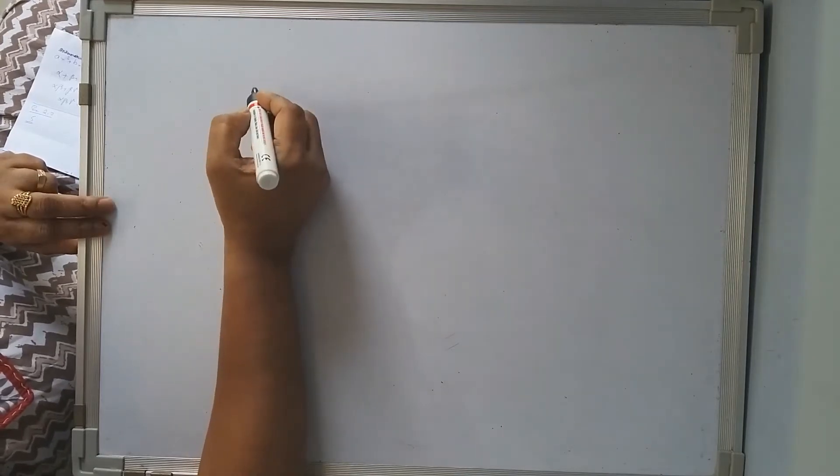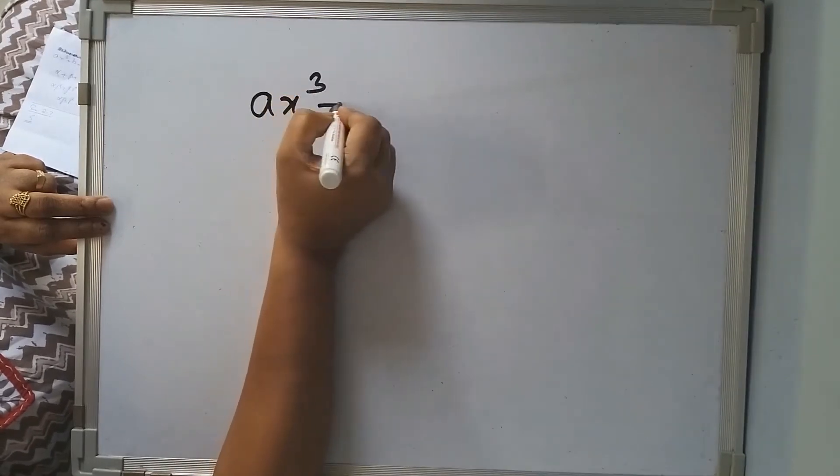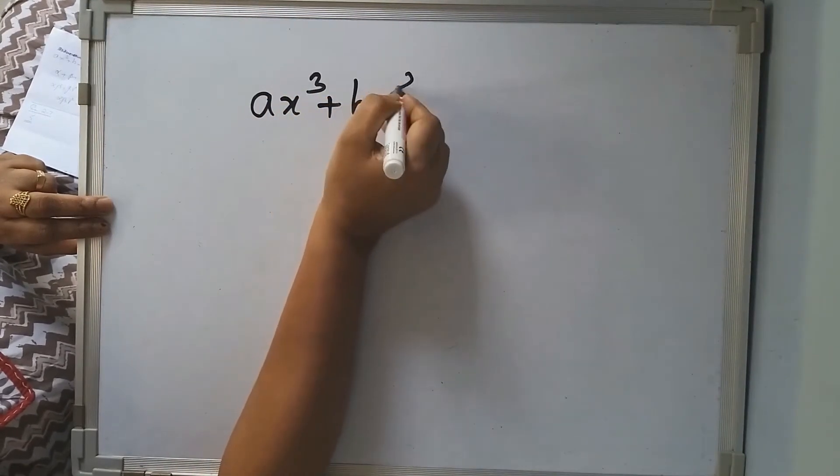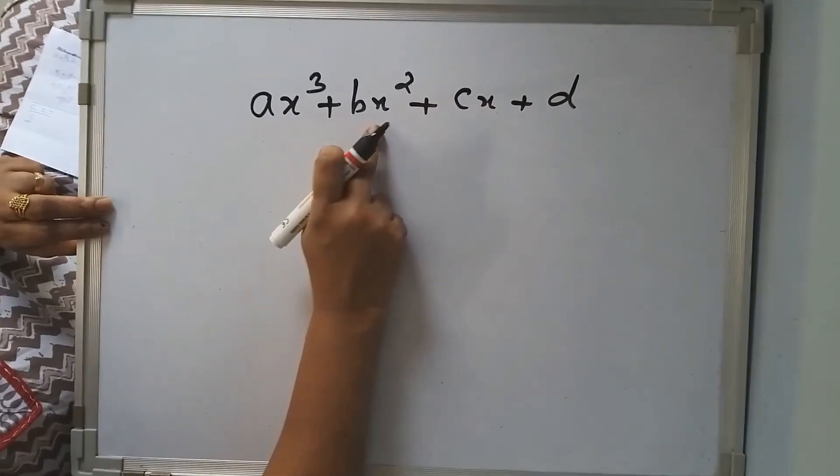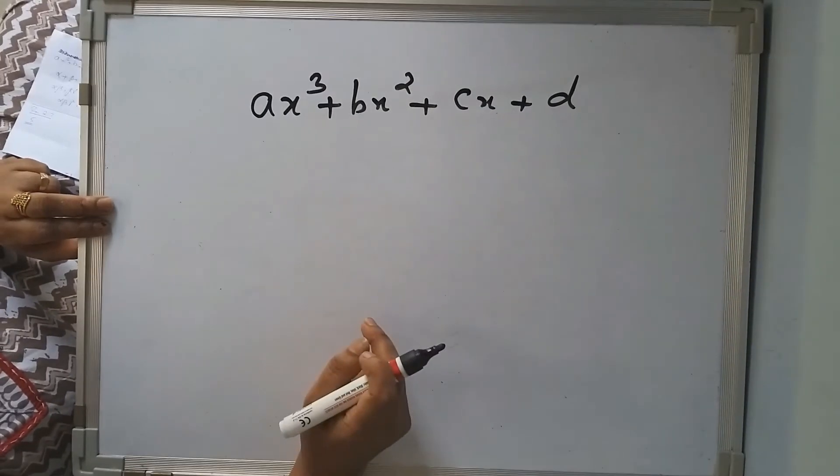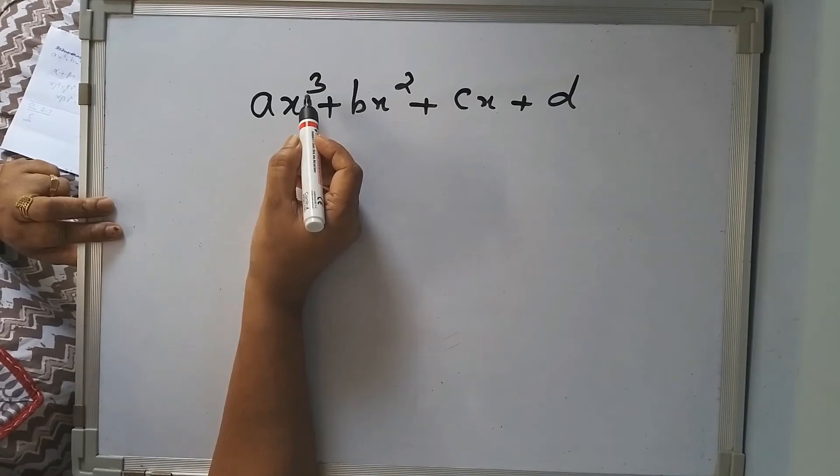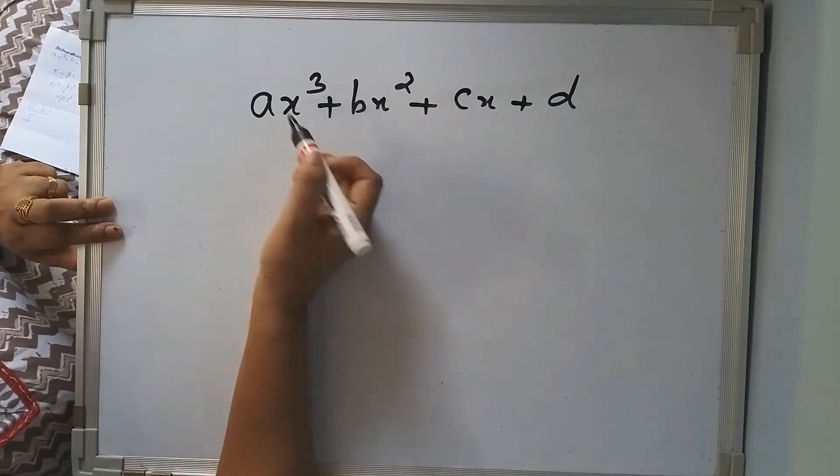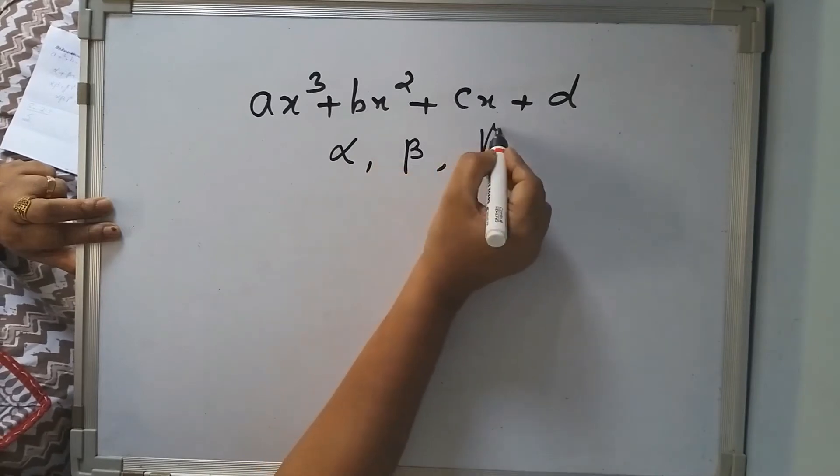Just like that, if the polynomial is cubic, that is ax cube plus bx square plus cx plus d, that is a cubic term, square term, degree 1 term, and a constant term. Then you know the number of zeros at most is 3, namely alpha, beta, and gamma are the zeros.